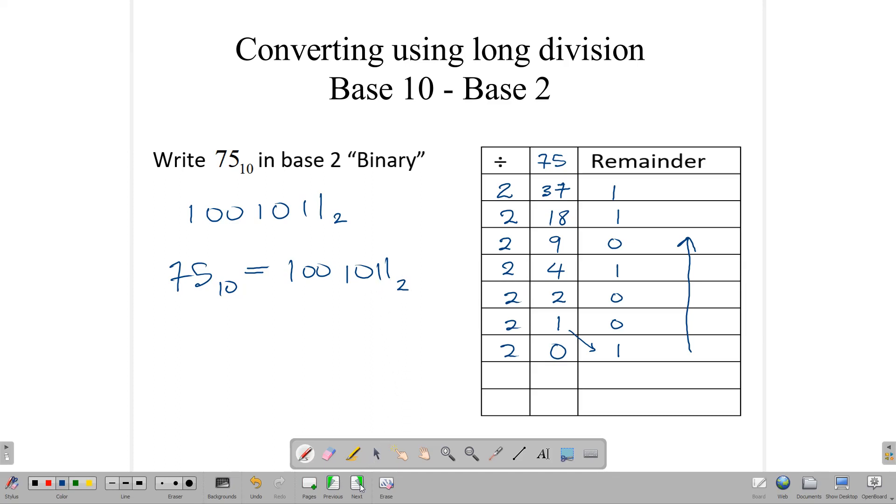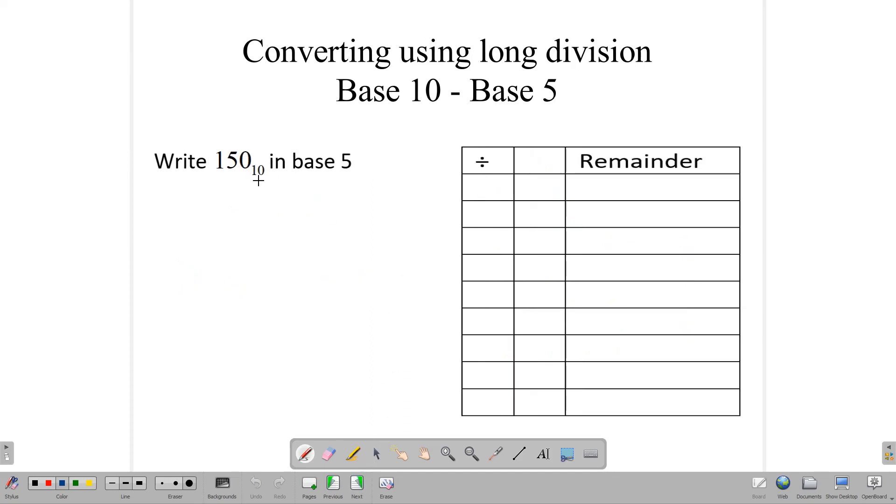Let's try it again with another example. Here we want to write 150 in base 5. So what we're going to do is write our 150 here, and we are going to divide by 5 since we want to write it in base 5. Now 5 into 150 gives us 30 times. There's no remainder.